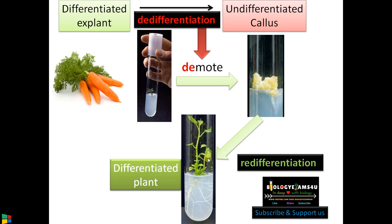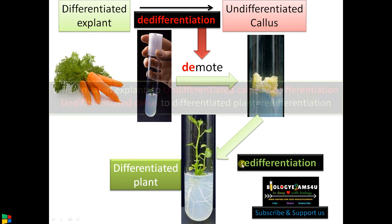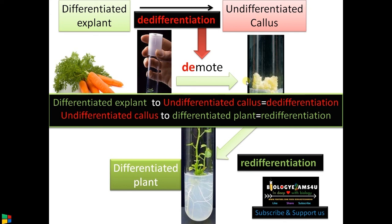In short: the formation of undifferentiated callus from differentiated explant is called de-differentiation, whereas the formation of a differentiated plant from undifferentiated callus is called re-differentiation. Hope you are clear!